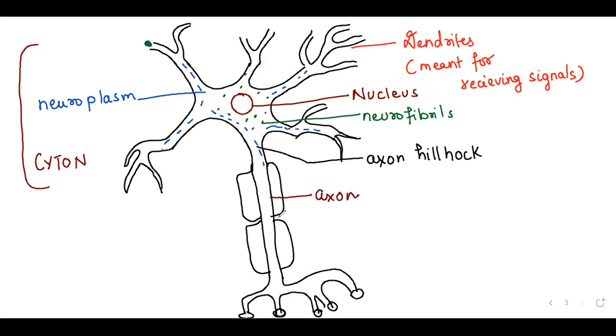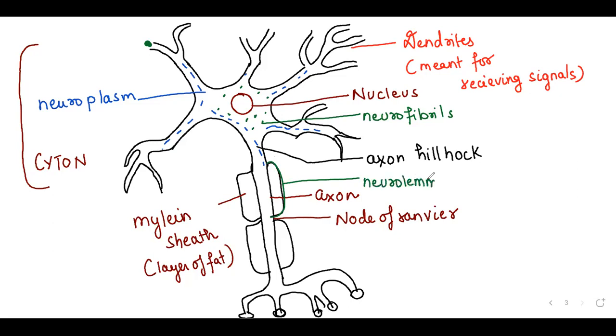And here, where fat cells are not there and we can see only axon, this is known as node of Ranvier. This is myelin sheath. Myelin sheath is the layer of fat which provides protection. And here you will see this outer layering, this part is known as neurolemma. Neurolemma means it is a plasma membrane of axon.